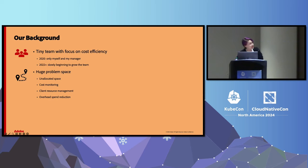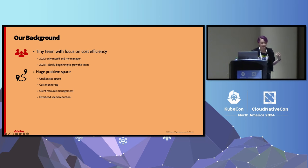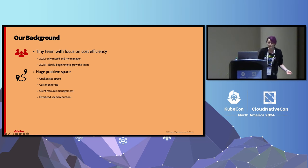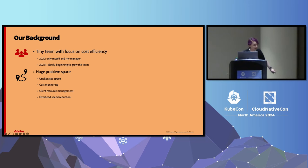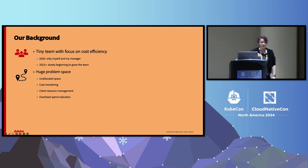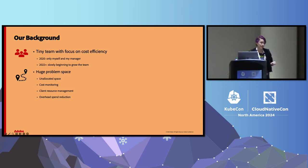Our background: the cost efficiency team on Ethos was, and still somewhat is, a tiny team with a focus on cost efficiency. We started off with pretty much just me and my manager in 2020, and slowly started to grow over the past few years to deal with a huge problem space — unallocated space, cost monitoring, client resource management, and overhead spend reduction. One path we went down was improving our resource management by improving our bin packing.